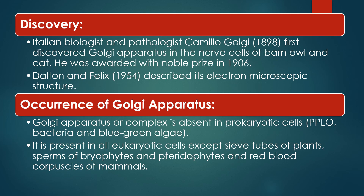Let us now see who discovered Golgi bodies. Golgi bodies were discovered by Italian biologist and pathologist Camillo Golgi in 1898, when he was studying nerve cells of barn owl and cat. For this great contribution he was awarded the Nobel Prize in Physiology or Medicine in 1906.